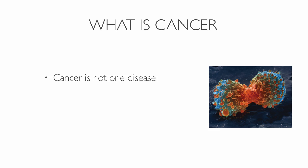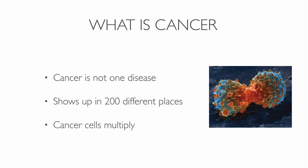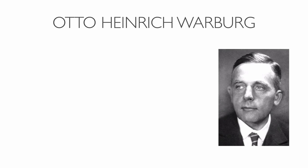So what exactly is cancer? Cancer is not one disease — it can show up in 200 different places in the body. What every one of these cancers have in common is that the cells grow in an unusual way. The body consists of billions of cells, and every cell has DNA with instructions on what to do. Cells have a life expectancy. Healthy cells divide when they should and die when they should, but cancer cells divide even when they shouldn't, so many new cells grow that the body doesn't need.